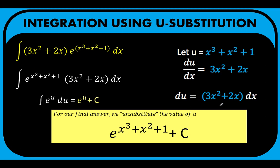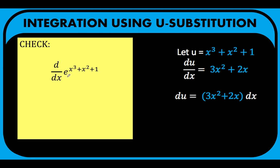Here is a clearer presentation of our answer. How do we know if our answer is correct? Remember that differentiation and anti-differentiation are opposite operations — one reverses the effect of the other. So if we get the derivative of e raised to (x cubed plus x squared plus 1), notice that it is a composite function where the outer function is e raised to the exponent and the inner function is the exponent itself. To get the derivative, we apply the chain rule: first get the derivative of the outside function, which is the function itself.